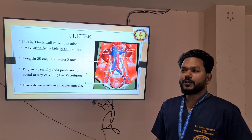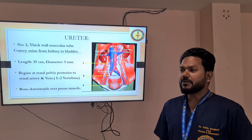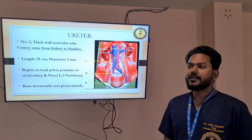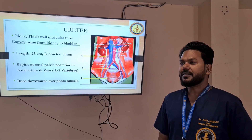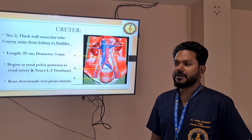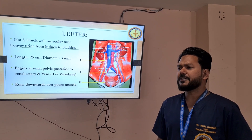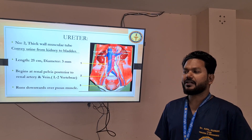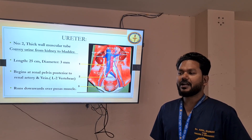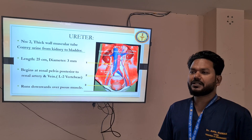Ureters are two in number. Basically, the ureter is a thick-walled muscular tube which conveys urine from kidney to bladder. Its length is 25 centimeters and diameter is 3 mm. It begins at the renal pelvis, posterior to the renal artery and vein, at the level of L2 vertebra, and runs downwards over the psoas muscles.